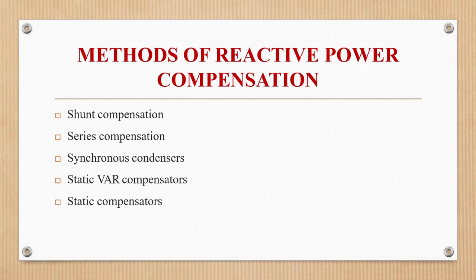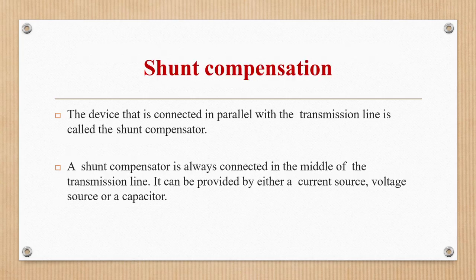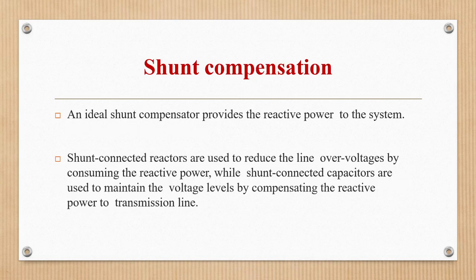There are basically five methods of reactive power compensation: shunt compensation, series compensation, synchronous condensers, static VAR compensators, and static compensators. For shunt compensation, the device connected in parallel with the transmission line is called a shunt compensator. It is always connected in the middle of the transmission line and can be provided by either a current source, voltage source, or a capacitor. An ideal shunt compensator provides reactive power to the system.